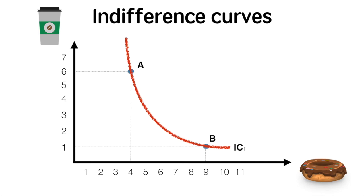IC1 is our indifference curve which represents all combinations that give the consumer equal utility. You'll notice as doughnuts become more abundant and coffee becomes more scarce, I'm willing to trade more doughnuts for a single cup of coffee.